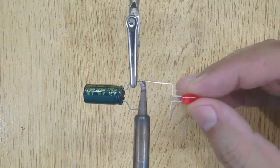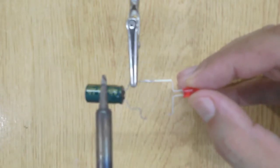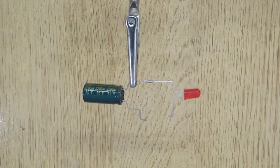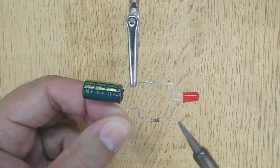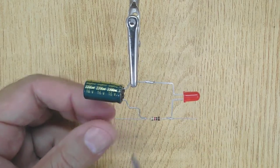First, solder the negative terminals of the LED and capacitor. Now solder the 1K resistor with the positive terminal of the LED, and then solder it to the positive terminal of the capacitor.